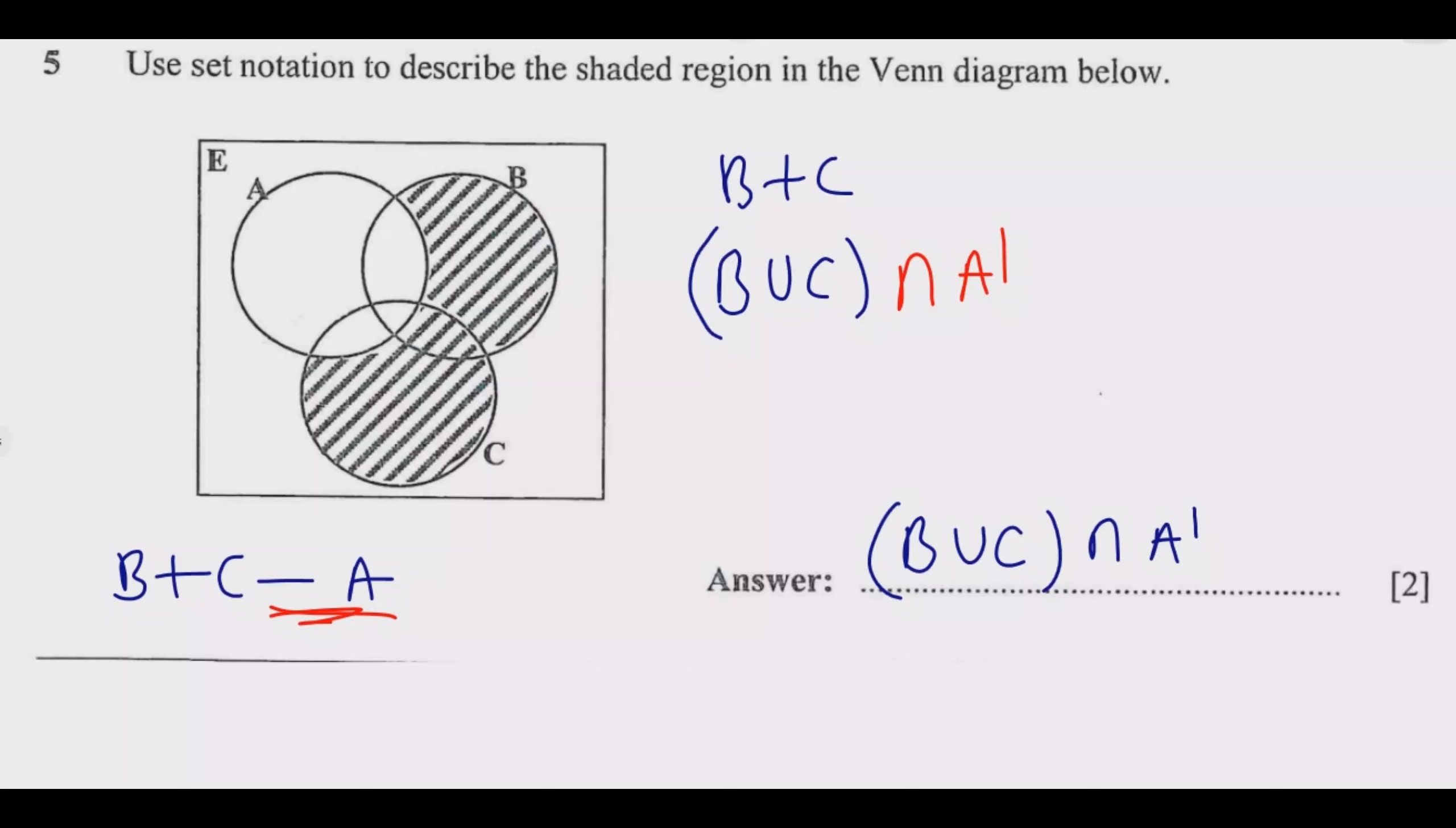This can also be written as B intersection A complement union C intersection A complement. This is still the correct answer.